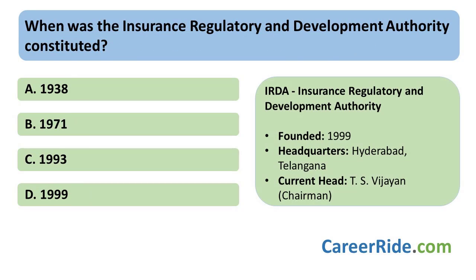Another very important question related to banking and insurance awareness: when was the IRDA constituted? The IRDA was constituted or founded in the year 1999 as an autonomous body under the IRDA Act of 1999. The IRDA is an autonomous statutory agency tasked with regulating and promoting the insurance and reinsurance sector in India. At present, the headquarters of IRDA are in Hyderabad, Telangana, and the current chairman is Mr. T.S. Vijayan.